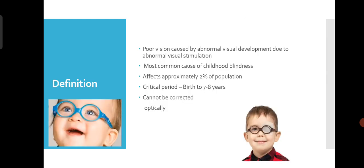Amblyopia affects around 2% of the population, which is quite alarming. The critical period is from birth to 7 to 8 years of age, and it is the most common cause of childhood blindness. We need to be very alert.